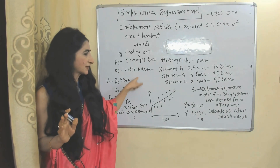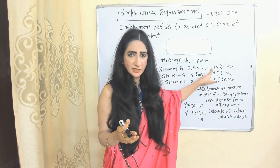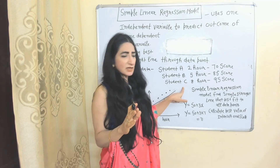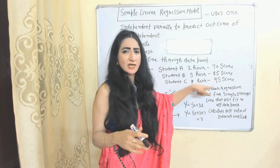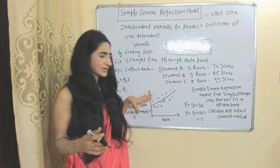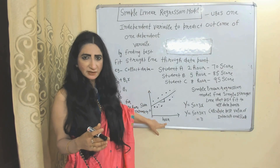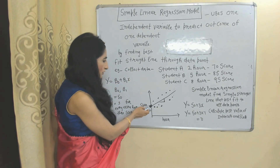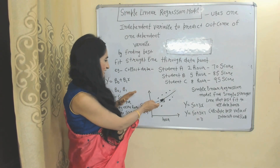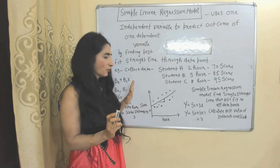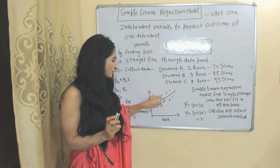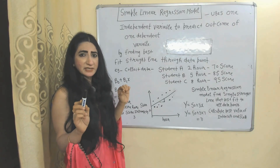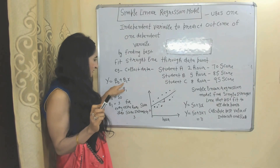For example, you collect data: Student A studies 2 hours and receives a score of 70; Student B studies 5 hours and receives 85; Student C studies 8 hours and receives 95. You plot all this data on a graph with study hours on the x-axis and score on the y-axis. The simple linear regression model finds the best-fit straight line through all data points. If the line is far from actual data points, variance is higher. In simple terms, the model helps find the value of the intercept and slope.